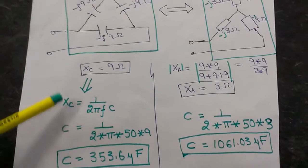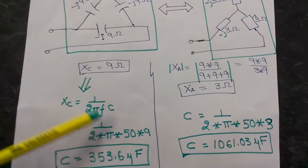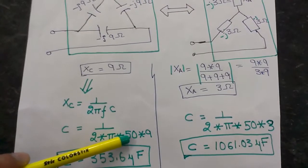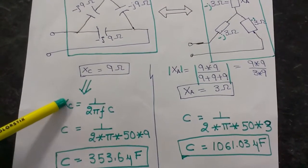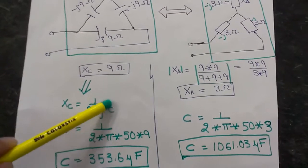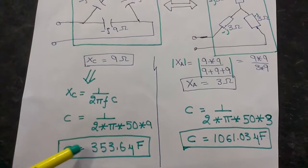And we know X equals one upon two pi FC. In India the frequency is 50 Hertz, so I have to calculate the value of the capacitor. The capacitance of the capacitor in case of Delta configuration comes out to be 353.6 microfarad.